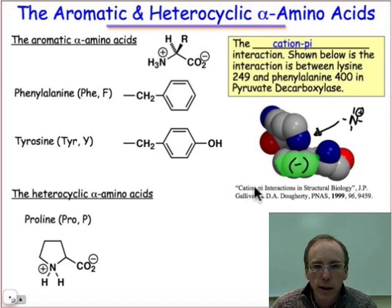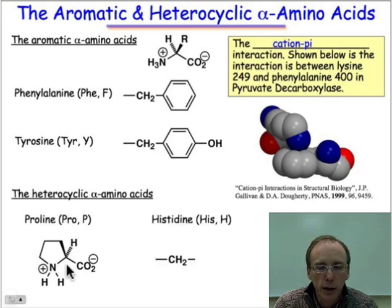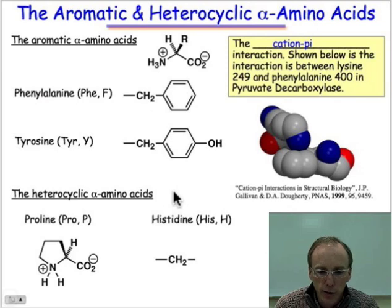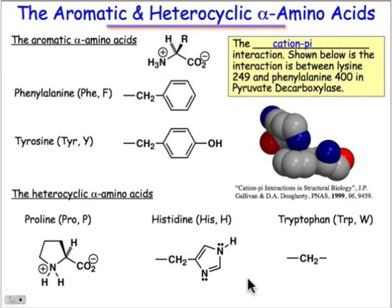Proline and histidine are heterocyclic amino acids. Proline maintains the L-alpha configuration. Histidine has the imidazole side chain — that 5-membered ring is connected to a CH2, much like tyrosine and phenylalanine. It has a heterocyclic aromatic ring with two nitrogens: one N3 type and one N2 type. Tryptophan has a similar structure — a CH2 followed by a 5-membered heterocyclic ring, fused to a benzene ring, with the nitrogen in the same position as in histidine's imidazole.